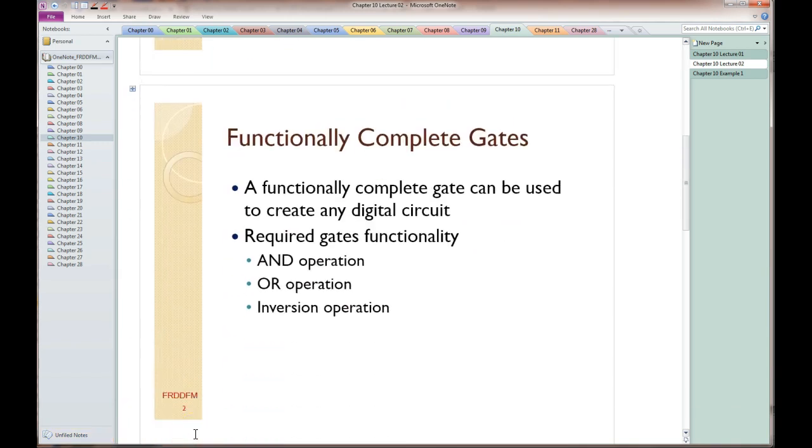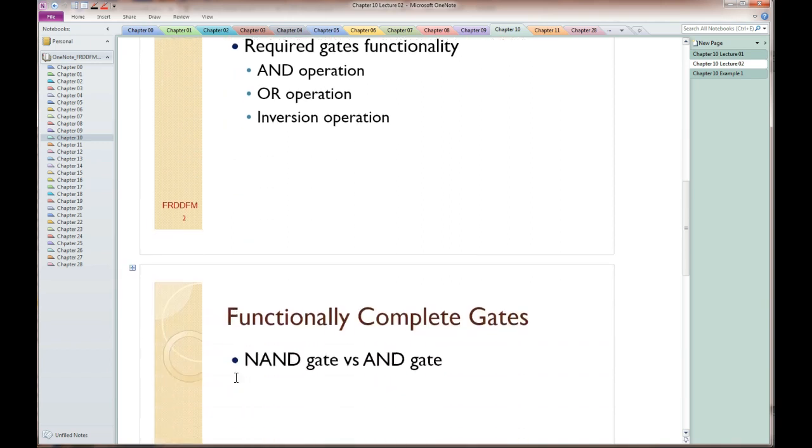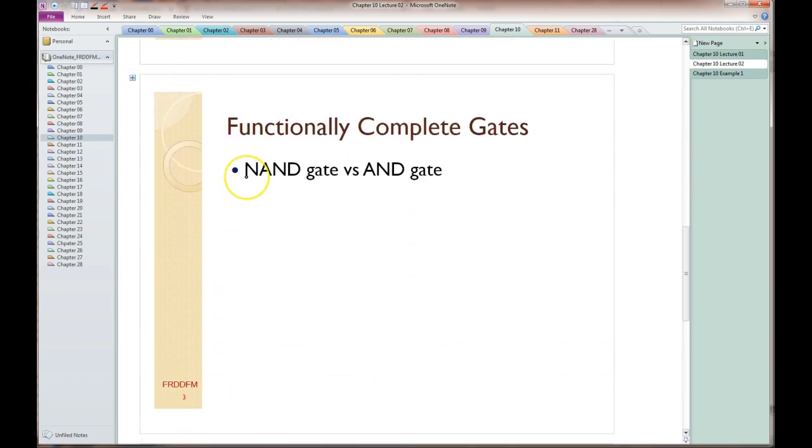A functionally complete gate is a gate that you can use to implement an AND operation, OR operation, and an inversion operation. So those are the three basic Boolean logic operations. A functionally complete gate can do all three of those. We'll take a look at this. We'll look at it in more depth in another chapter.